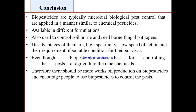Biopesticides are typically microbial pest controls applied in a manner similar to chemical pesticides, available in different formulations. They are used to control soil-borne and seed-borne fungal pathogens. Disadvantages include high specificity, slow speed of action, and requirement of suitable conditions for survival. Biopesticides are best for controlling pests compared to chemicals, therefore there should be more work on production of biopesticides and encouraging people to use them for sustainable utilization to stop agricultural diseases.